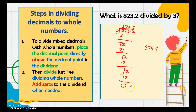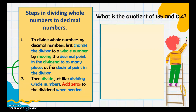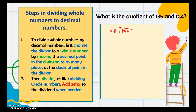Next: what if the given question is 135 divided by 0.4? Here are the steps for dividing whole numbers by decimal numbers. First, change the divisor to a whole number by moving the decimal point to the right as many places as needed. We have 135 divided by 0.4. We move the decimal point in 0.4 one place to the right to get the whole number 4.